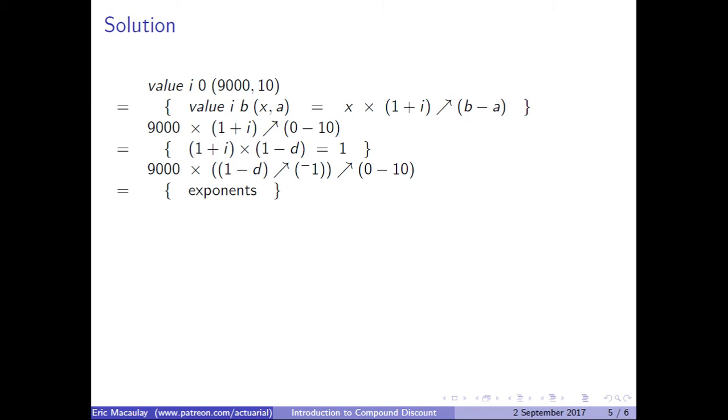Using exponents, we can see that this is really negative 10, and when you have something like x to the power of A to the power of B, that's the same as multiplying these two exponents. So we get (1 - d) to the power of 10. This is negative 1, this is negative 10, multiply them together, negative 1 times negative 10 is 10.